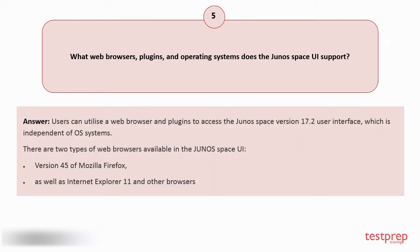Question number five: What web browsers, plugins, and operating systems does the Junos Space UI support? Your answer is: Users can utilize a web browser and plugins to access the Junos Space version 17.2 user interface, which is independent of OS systems. There are two types of web browsers available: one, version 45 of Mozilla Firefox; two, Internet Explorer 11 and other browsers.